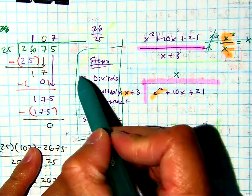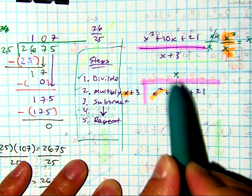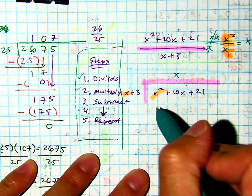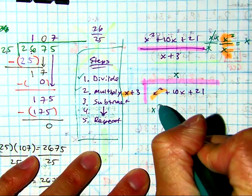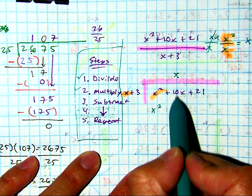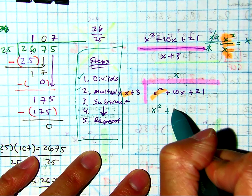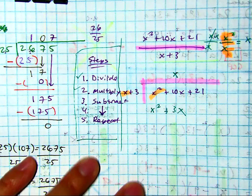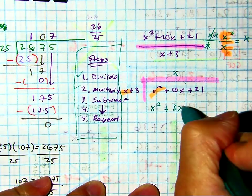So we just divided. And now we're going to multiply. Class, what's x times x? And x times 3 is? Now 3x falls underneath the 10x because they're alike terms.